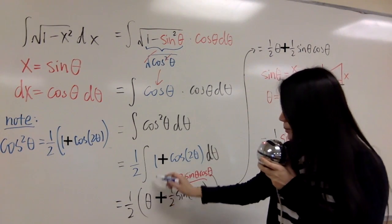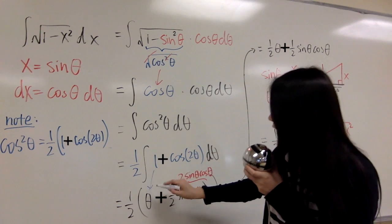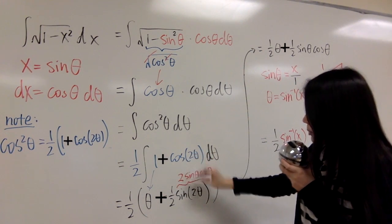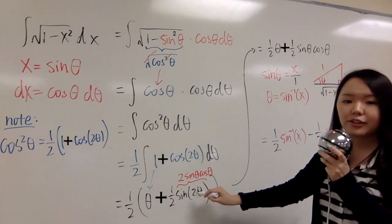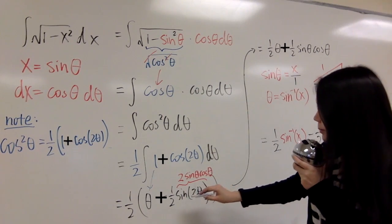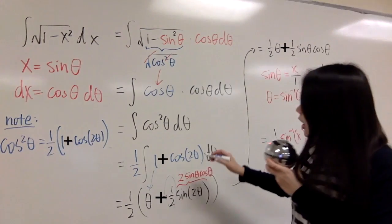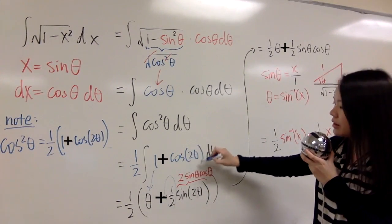So 1 becomes theta, cosine 2 theta becomes a half sine 2 theta, don't forget a half because you can use u sub to this one.